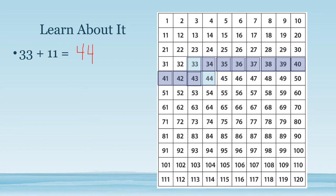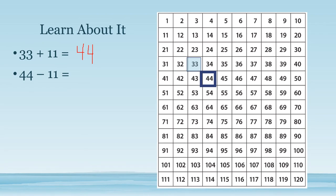Now let's try with subtraction. We will do 44 minus 11 by taking 11 ones away. Let's start on 44 and take away our 11 ones: 1, 2, 3, 4, 5, 6, 7, 8, 9, 10, 11. We see that when we subtract 11, it's as if we took away 10 and then took away one more. So 44 minus 11 equals 33.